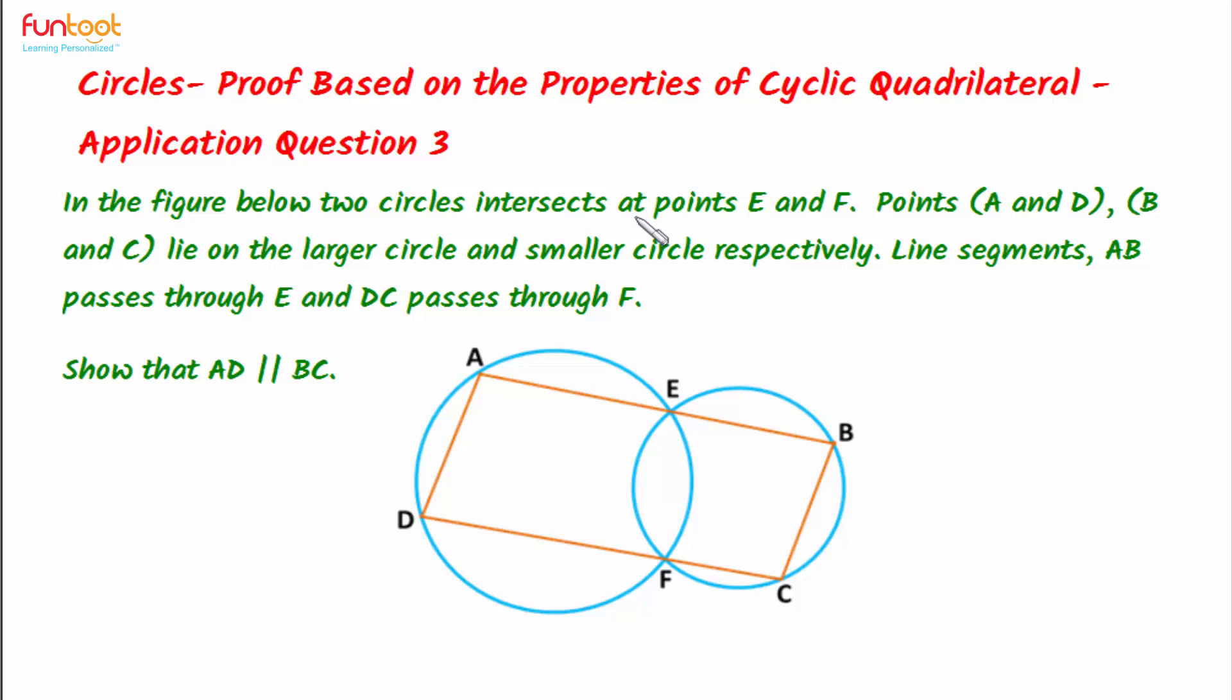Let's do a problem. In this figure here, two circles intersect at points E and F. Points A and D, and B and C, lie on the larger circle and the smaller circle respectively. Line segment AB passes through point E and line segment DC passes through point F. We have to show here that AD is parallel to BC.